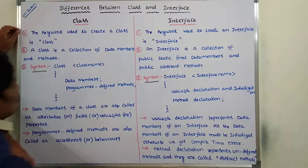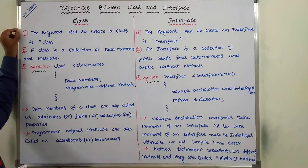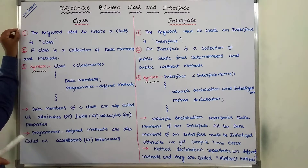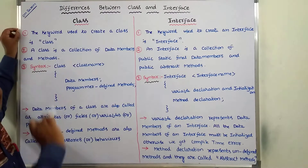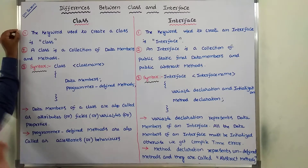The first difference: to create a class, we have to use a keyword called 'class'. That means the class keyword is used to create a class. Whereas in the case of interface, to create an interface, we have to use a keyword called 'interface'.